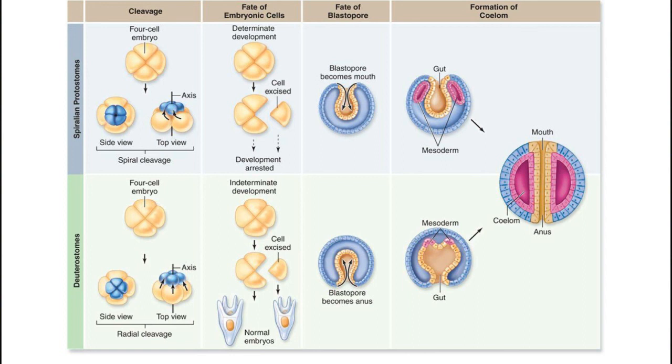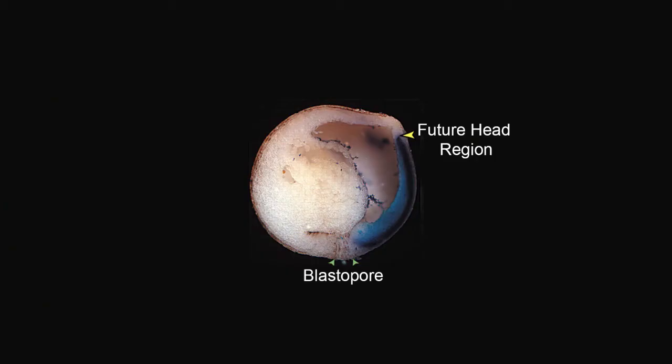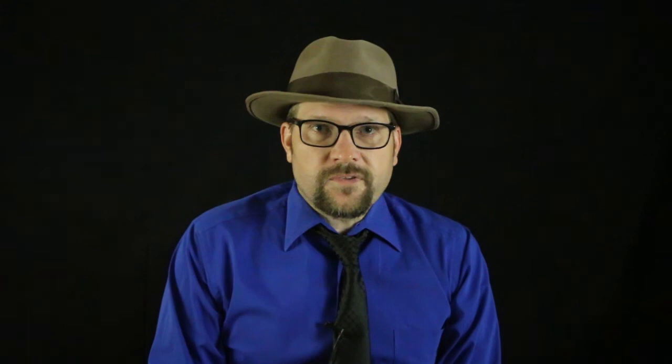In some organisms, such as members of the cnidaria — which includes jellyfish and corals — the blastopore forms the single opening for both ingestion and excretion of food and waste. In insects, worms, and molluscs such as octopuses, the blastopore forms the mouth, and a second opening appears to form the anus. In vertebrates, such as this frog embryo, the blastopore forms the anus, while a separate opening forms the mouth. These animals we call deuterostomes.